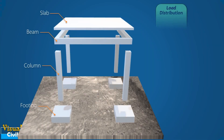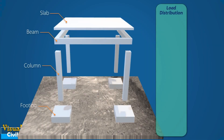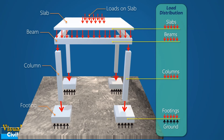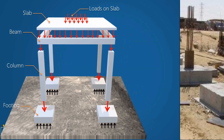In the load transfer mechanism of an RCC frame building structure, the applied loads on the floor and roof slab are transferred to the supporting beams. The beams transfer this load to the supporting columns, and the columns transfer this load to the footing. Finally, the footing transfers the load to the underneath soil. Hence, the footings are the most important component of the structure.